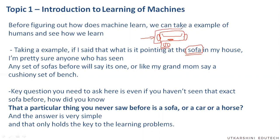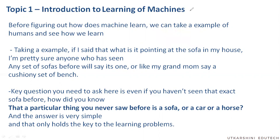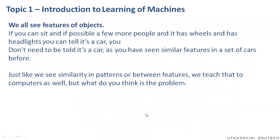That ability is based on what we call features, or for most students, the characteristics or properties of different things. What we observe in any object are basically its features. For example, let's say I draw something — and before I even finish this drawing, most of you will say this is a car.